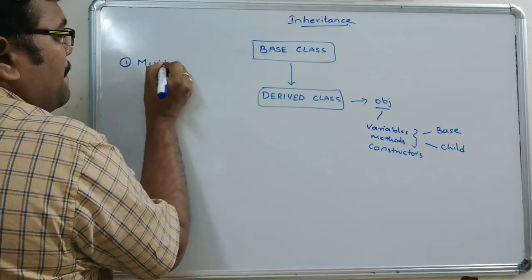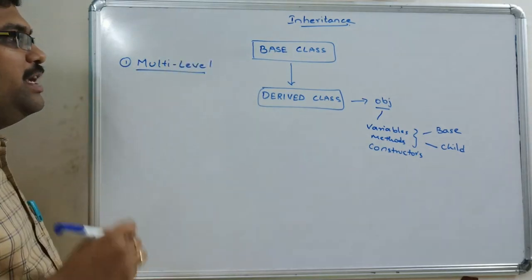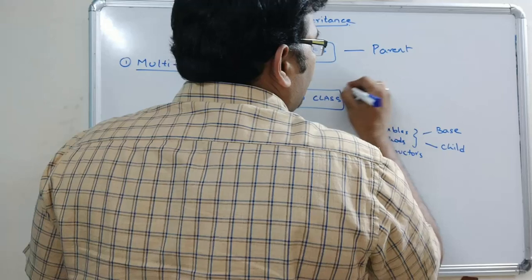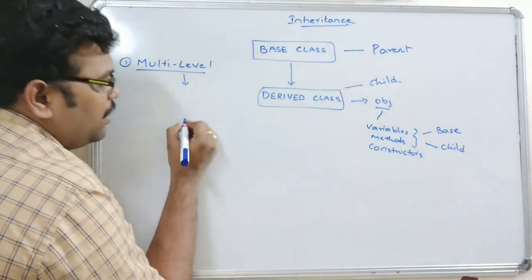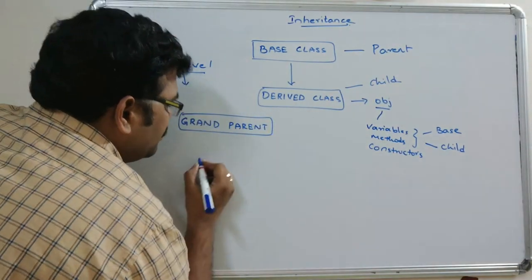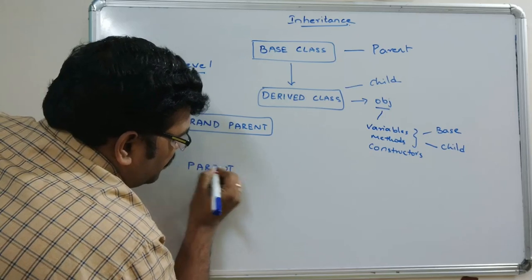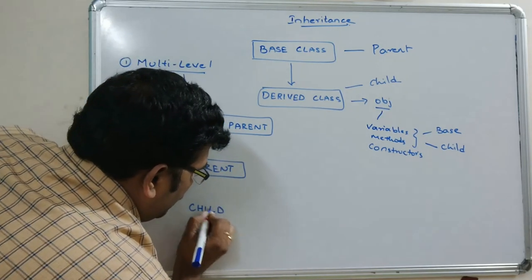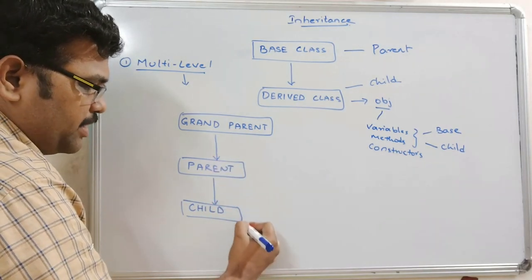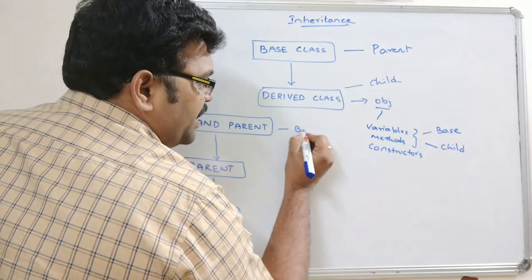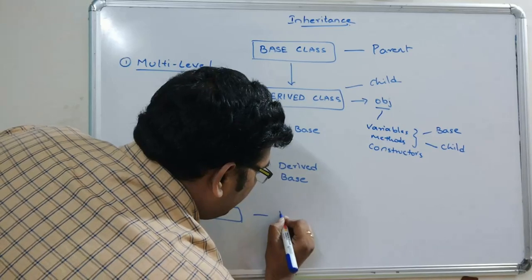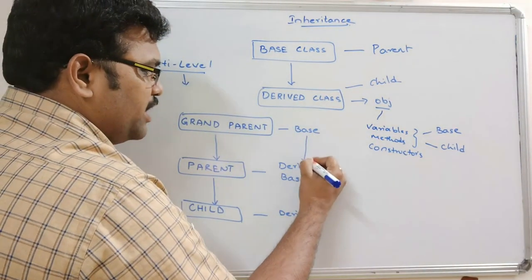Now coming to multi-level inheritance — in multi-level inheritance there will be three levels: a grandparent class, a parent class, and a child class. From the grandparent, the parent will acquire the properties, and from the parent, the child will acquire the properties. So the grandparent is a base class, the parent is both a derived and a base class, and the child is the derived class.